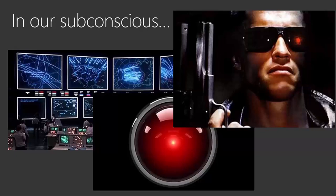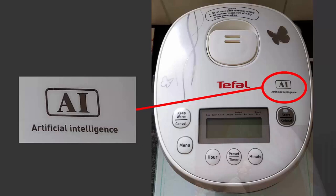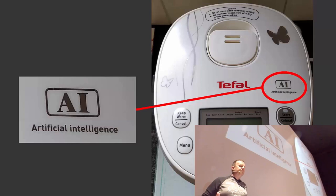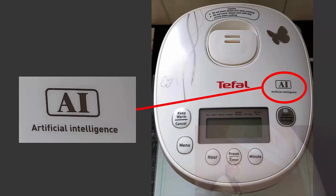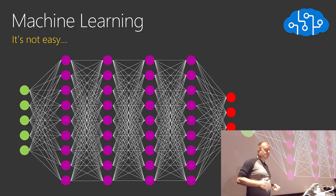In our subconscious, AI tends to have a negative connotation. Or what happens today — and this is a real appliance which is really in my kitchen — it's a rice cooker which uses AI to cook rice, which of course doesn't make any sense. So we have this weird misunderstanding, and I think the public even more so has a weird misunderstanding of what AI, machine learning, and deep learning are. Machine learning is not easy. You're going to be confronted when you learn with some graphs — a deep neural network, a multi-layered neural network — and then you have some equations. So it's not super easy.